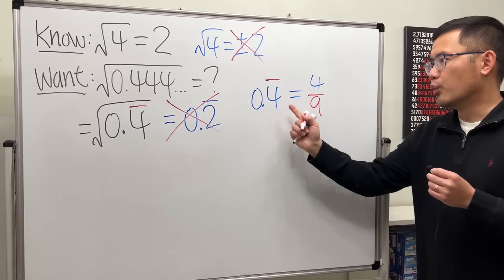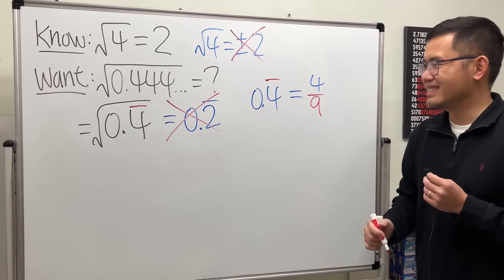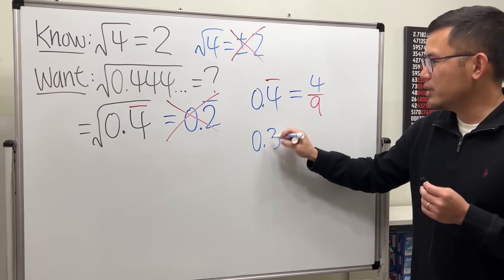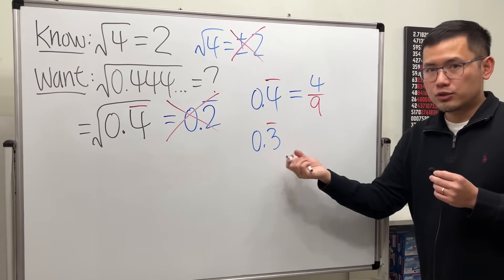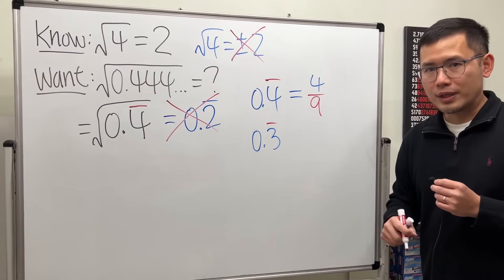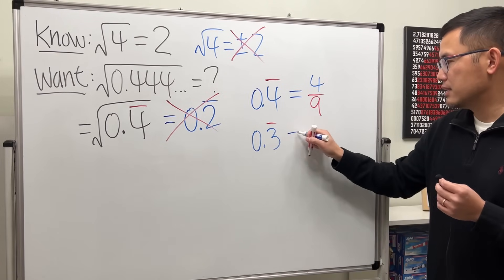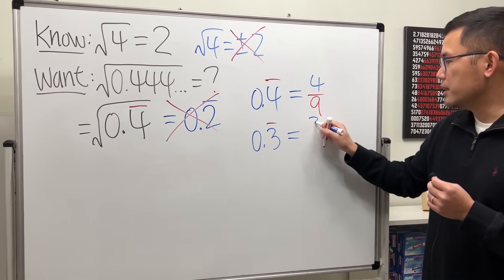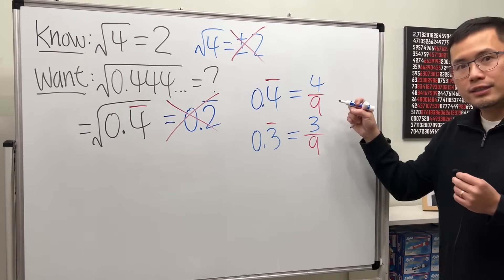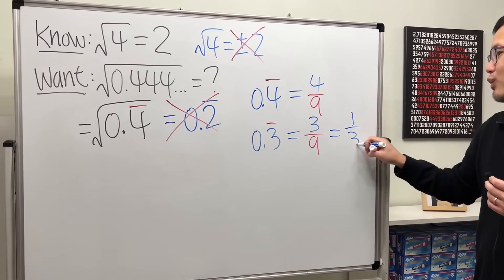So here's the deal. We have 0.44444 forever. Let's try another approach. If we have 0.3 repeating — 0.33333 forever — we all know that's equal to 1/3. Only 1 digit is repeating, so put 3 over 9. Reduce that — we get 1/3.